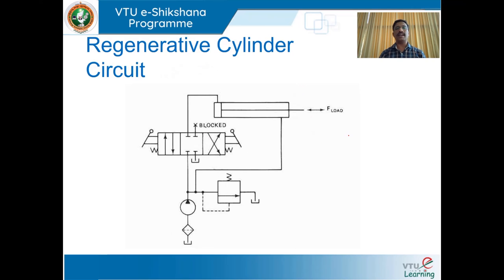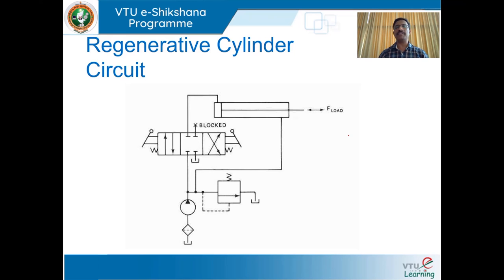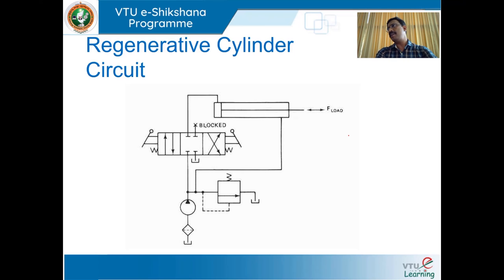Next, we shall move on to the regenerative cylinder circuit. Some applications demand that we need to increase the extending speed of the cylinder — that is, the extending speed greater than the normal or regular double acting cylinder. For intermittent motions, we may require this type of arrangement, and for that you can use this regenerative circuit.